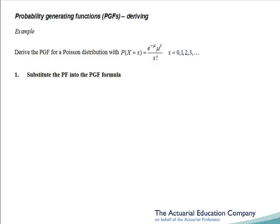Once again, step 1 is to substitute our probability function into the PGF formula. The PGF was the sum of t to the x times the probability function. So substituting that in, we obtain the sum of t to the x times e to the minus mu times mu to the x over x factorial.